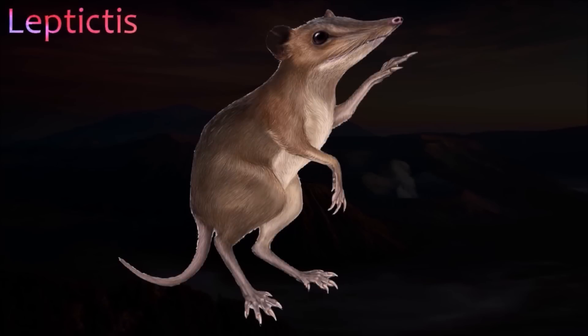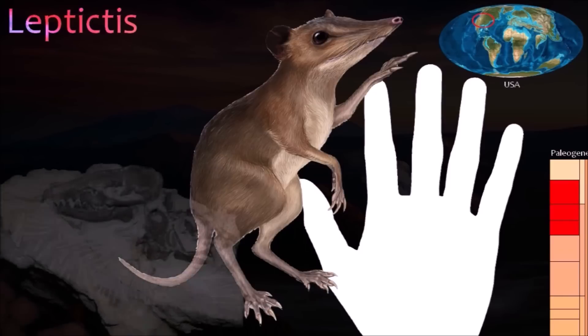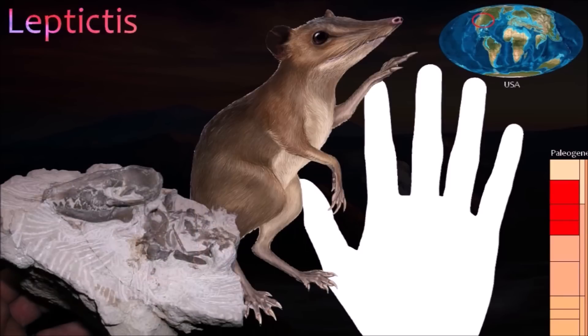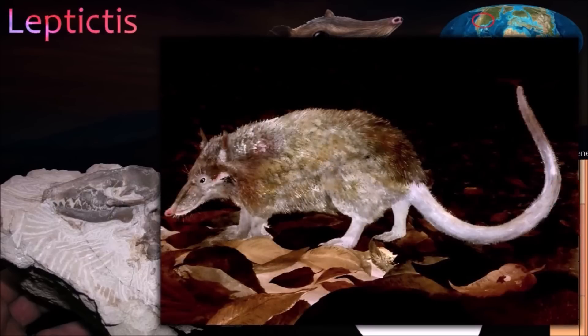Leptictis was an early relative of the insectivores — modern mammals that include hedgehogs, moles, and shrews. It would have stalked insects, amphibians, and lizards. It had a long snout filled with small teeth, including simple V-shaped molars like those of some modern insectivores. Along the top of the skull was a pair of long ridges where strong jaw muscles would have been attached.